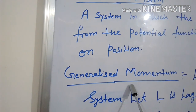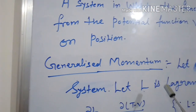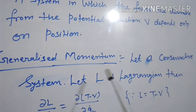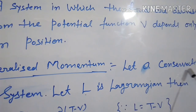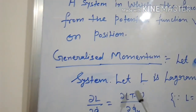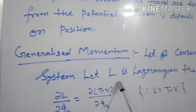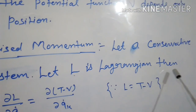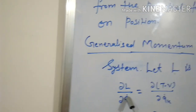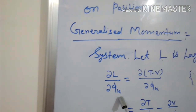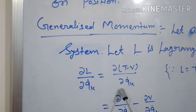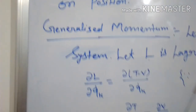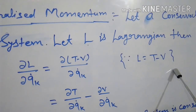Now, generalized momentum. The question arises: how do we define generalized momentum? For this, we consider a conservative system and let L be the Lagrangian function. Then del L upon del QK dot is equal to del upon del QK dot of T minus V.